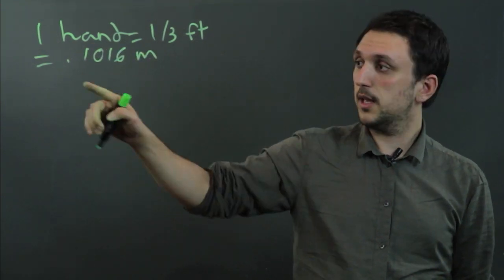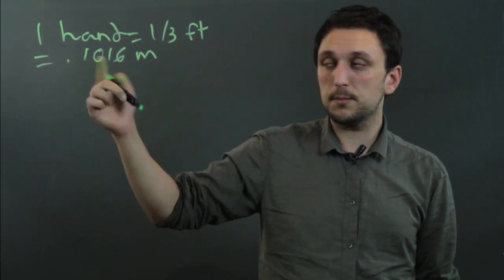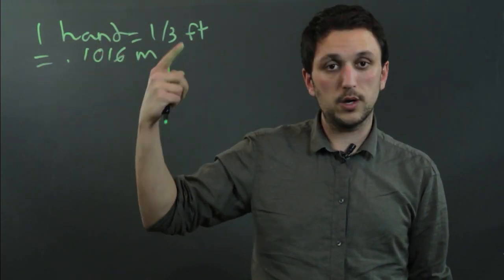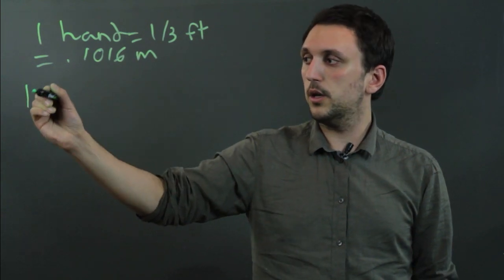Now if we want to cube a hand and we want to get cubic meters, well one hand times one hand times one hand equals one hand cubed.